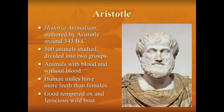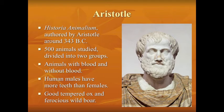Before Linnaeus there was Aristotle. In his Historia Animalium, authored around 343 BC, he divided 500 animals into two groups: those with blood and those without blood. He not only categorized them but wrote about them, including some little anecdotes — some of which were grossly mistaken, like claiming human men have more teeth than females.